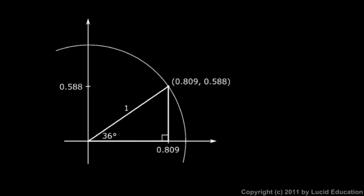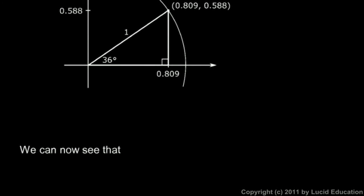Now think about the sine of a 36 degree angle. For a right triangle, sine is opposite over hypotenuse. So the sine of the 36 degree angle is this length divided by the length of the hypotenuse, which is 1. And this length — the opposite side — is just the same as the y coordinate of that point on the y-axis. So the sine of 36 degrees is equal to this length, which is 0.588, divided by 1, because we have a unit circle. So 0.588 over 1 is just 0.588.